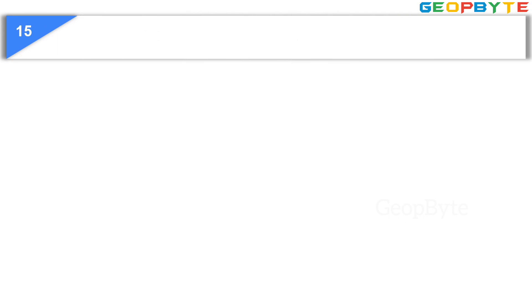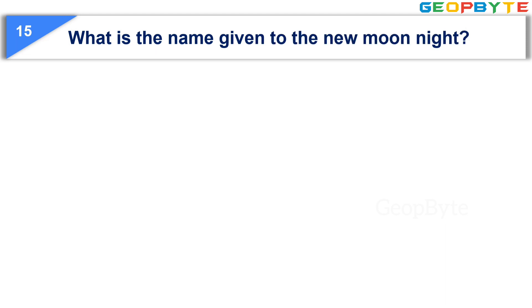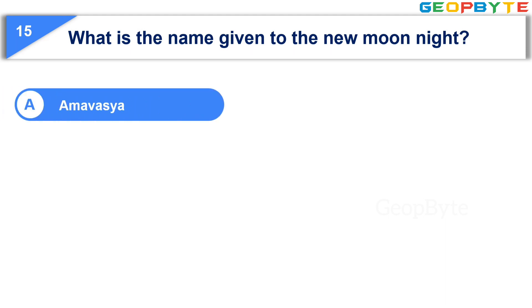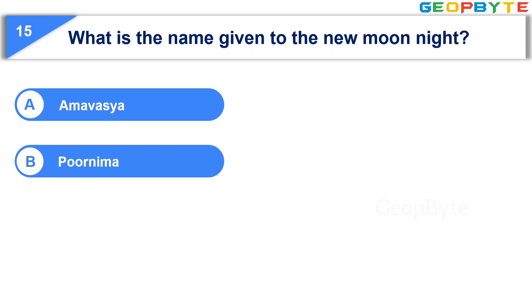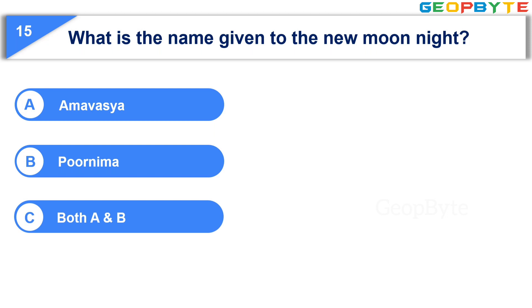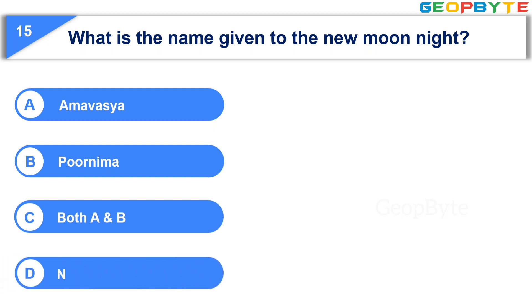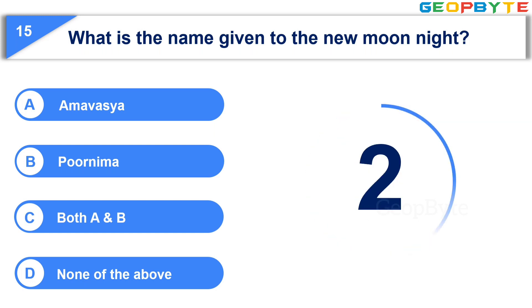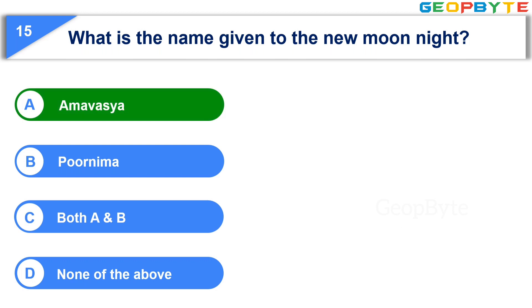Moving to the fifteenth question: What is the name given to the new moon night? Option A: Amavasya. Option B: Poornima. Option C: Both A and B. Option D: None of the above. Your time starts now. Your time is up and the correct answer is Option A: Amavasya.